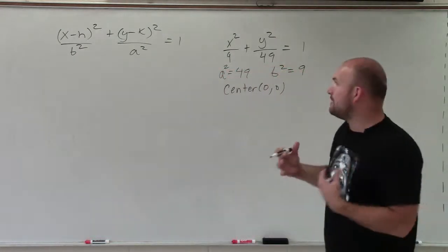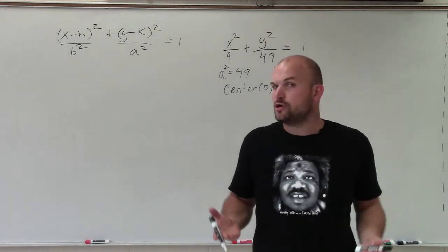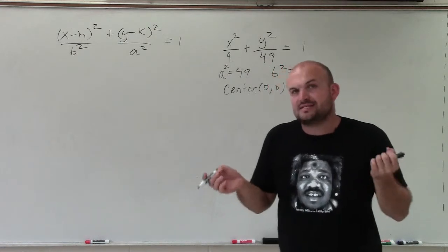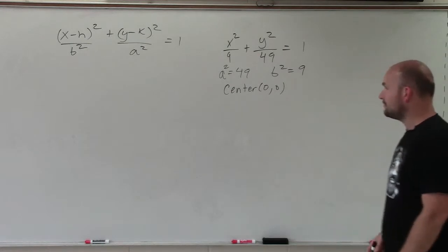What's very helpful about knowing what a and b is, it tells us where our major axis is. Because our major axis can be horizontal and vertical, and the major axis is important because on the major axis lies your vertices, your foci, and your center.